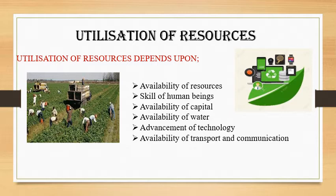The first picture depicts the message about the agriculture resource. For doing agriculture, some laborers are required. Some skilled and unskilled human beings are important for agriculture. Agriculture resource depends on skilled and unskilled labor, and also on technology.